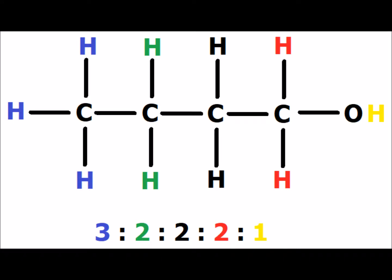In 1-butanol, we have five distinct types of hydrogen. One is the hydroxyl hydrogen shown in yellow, recognizable as a singlet. We have two hydrogens attached to the alpha carbon, shifted downfield at a high chemical shift. We have two more methylene hydrogens attached to the second carbon, two methylene hydrogens shown in green attached to the third carbon, and three blue methyl hydrogens attached to the fourth carbon. This gives us relative ratios of 3 to 2 to 2 to 2 to 1.